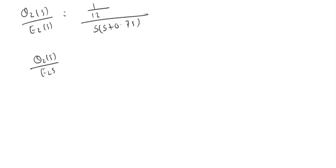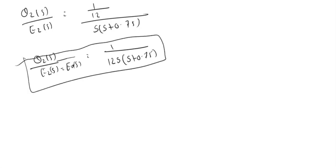The transfer function will be given by theta 2(s) divided by E2(s), which is 1/12 divided by S times (S plus 0.75). This can also be written as theta 2(s) over Ea(s) equals 1 over 12S(S plus 0.75). This is the final answer.